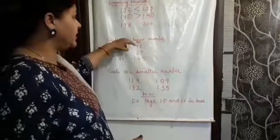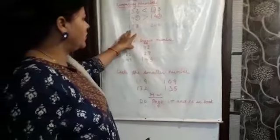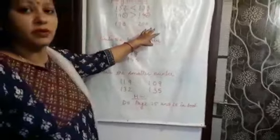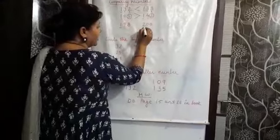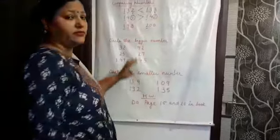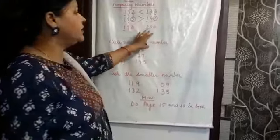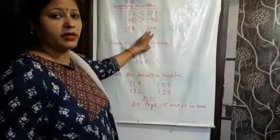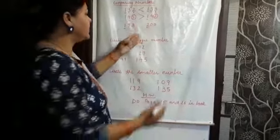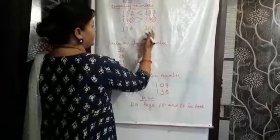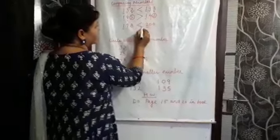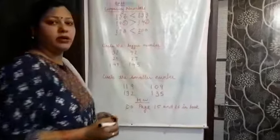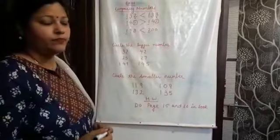Now see the next number: 198 and 200. First, we will compare the numbers at the hundreds place. Which is bigger? 2 is bigger. That means this number is bigger than this number, so we will make the sign toward this side.